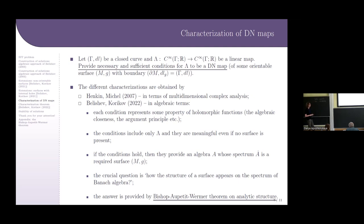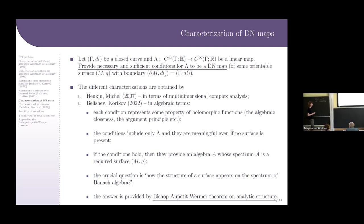The crucial question is how the structure of a surface appears on the spectrum of a commutative Banach algebra. The answer is provided by the classical Bishop–Mergelyan theorem on analytic structure, which is the key fact in the proof of sufficiency of our conditions.